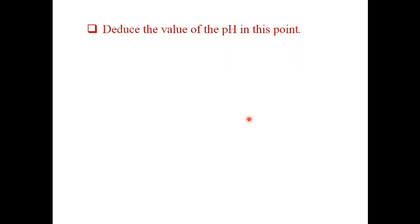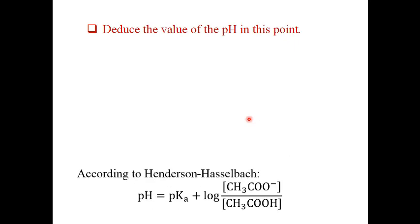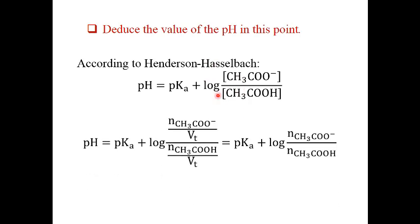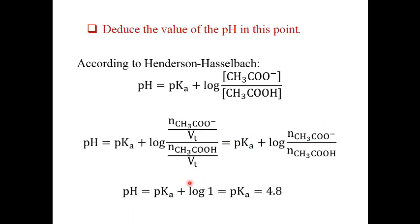To calculate the pH at this point, we apply Henderson-Hasselbalch, because we have a solution containing the acid and its conjugate base. We divide the moles by total volume, but V total cancels out. If the number of moles of acid and conjugate base are exactly equal, pH equals pKa exactly. This is the typical result at the half-equivalence point: pH = pKa.